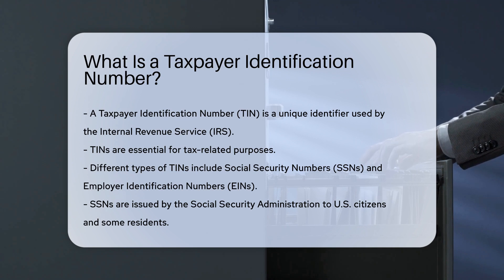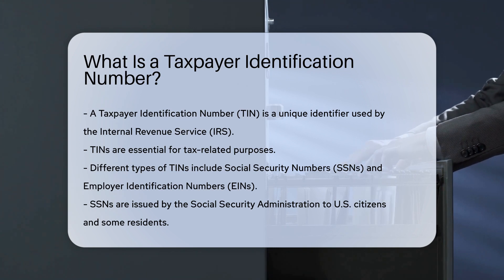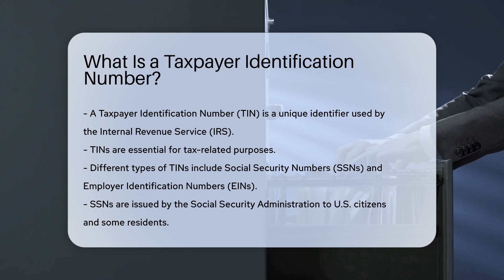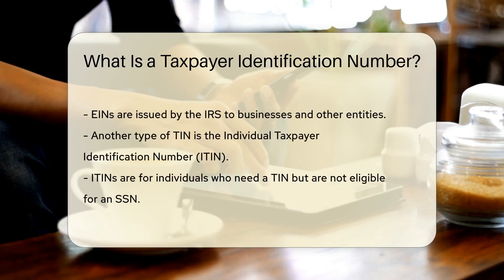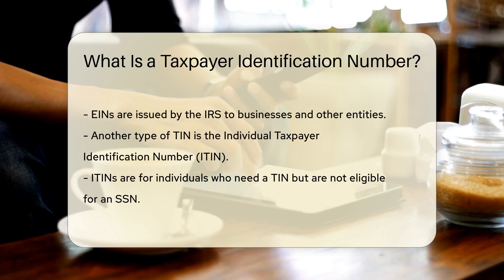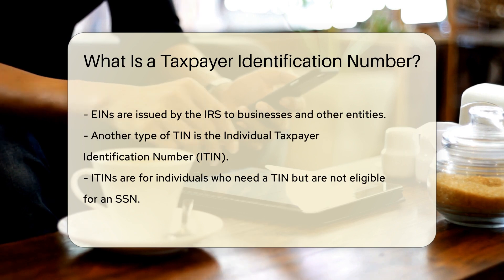There are different types of TINs, such as Social Security Numbers, or SSNs, and Employer Identification Numbers, or EINs. SSNs are issued by the Social Security Administration to U.S. citizens and some residents. EINs are issued by the IRS to businesses and other entities.